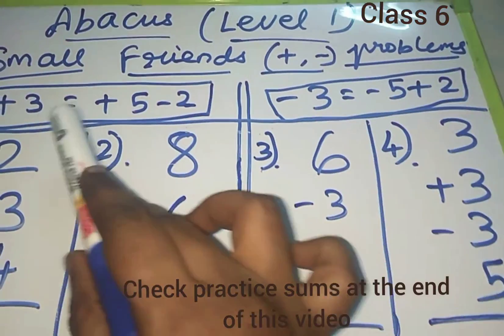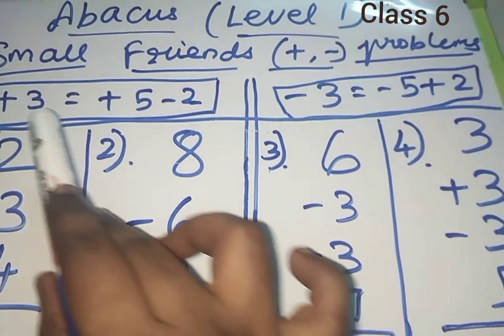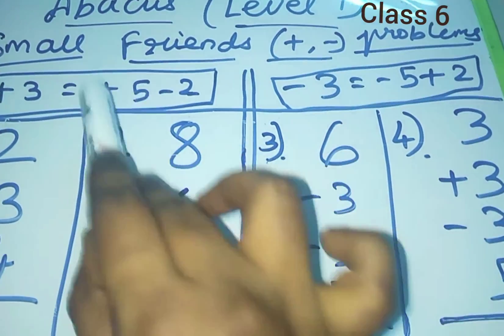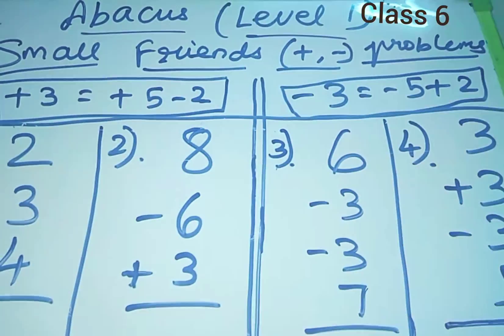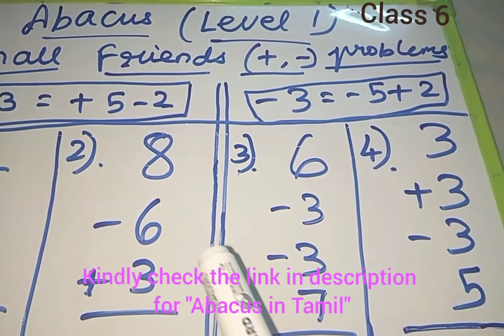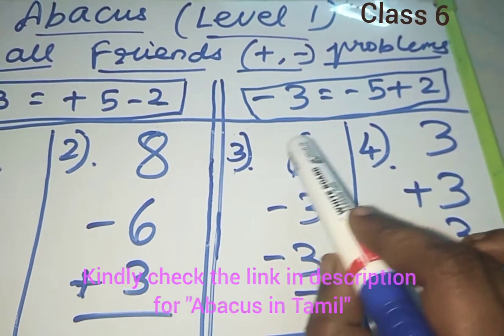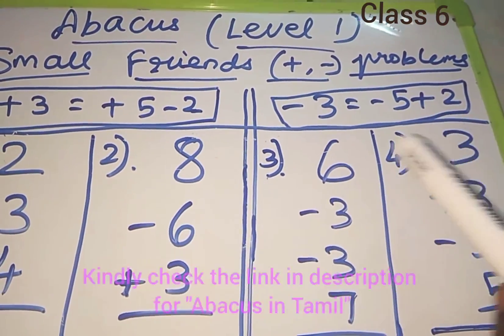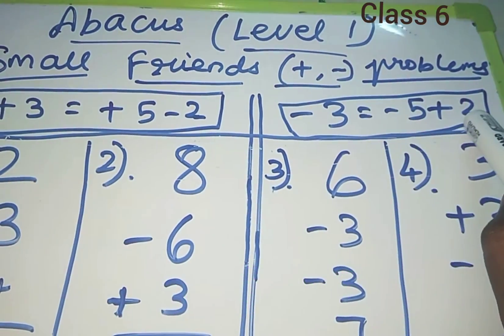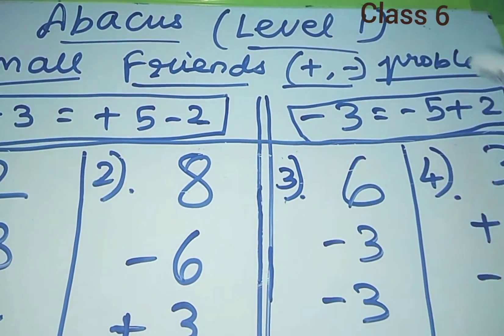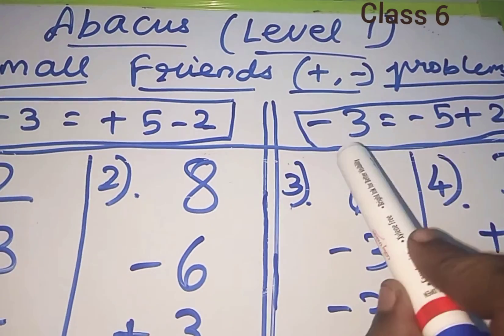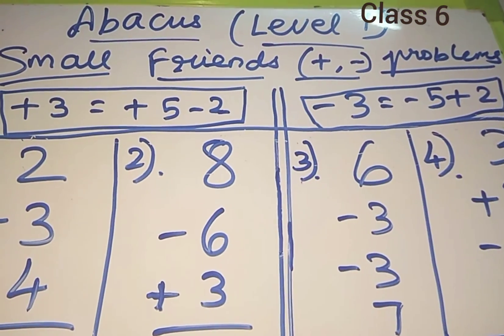The small friend formula for adding 3: plus 3 equals plus 5 minus 2. Three and 2 are friends. In the small friend formula, one friend is in plus and the other friend is in minus, and the boss will be in plus while doing addition. The formula for minus 3: minus 3 equals minus 5 plus 2. Since 3 is in minus, friend 2 should be in plus and boss will be in minus while doing subtraction.